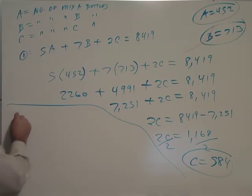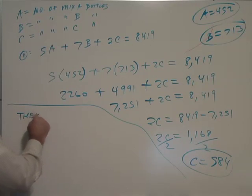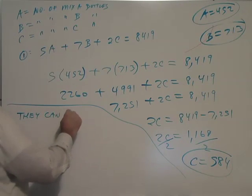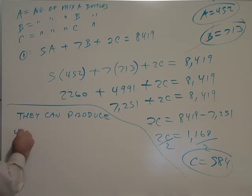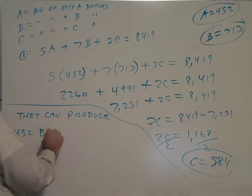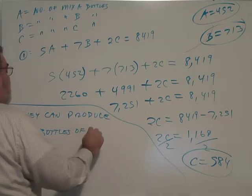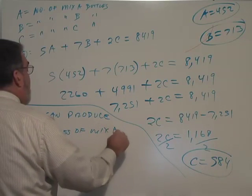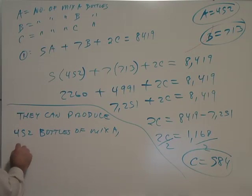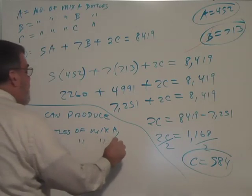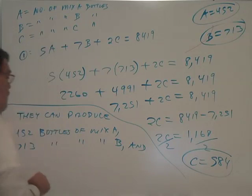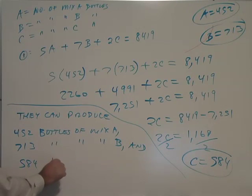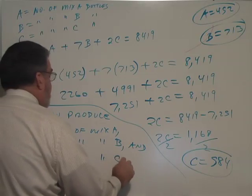All right, that they can produce 452 bottles of mix A, 713 bottles of mix B, and 584 bottles of mix C.